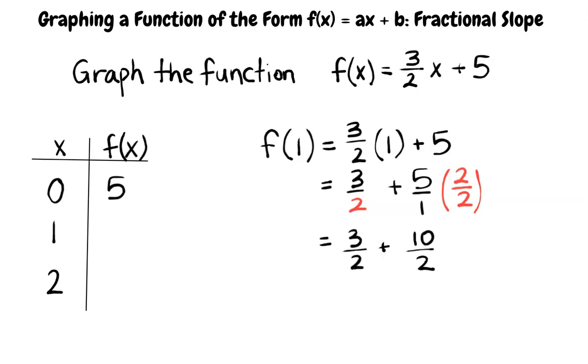Multiplying across the numerator, 5 times 2 equals 10. Multiplying across the denominator, 1 times 2 equals 2. The final fraction is 10 over 2. Now we have a common denominator, so we can add the two fractions. 3 over 2 plus 10 over 2 is equal to 13 over 2, or 6.5. Therefore, the second point is 1, 6.5.